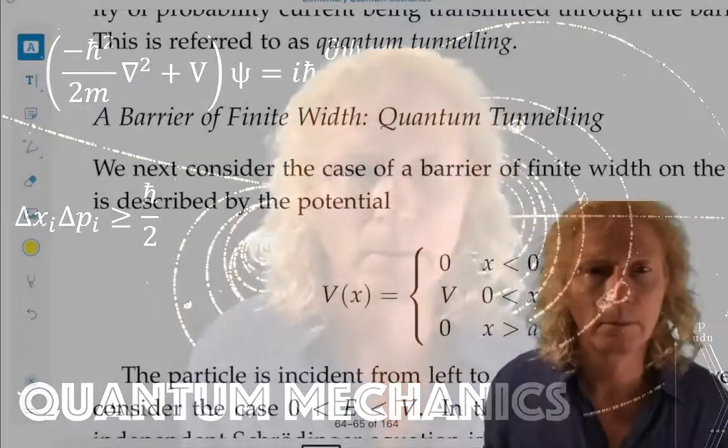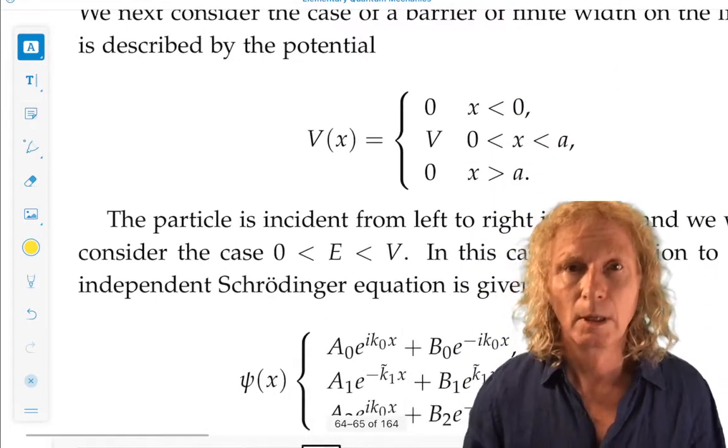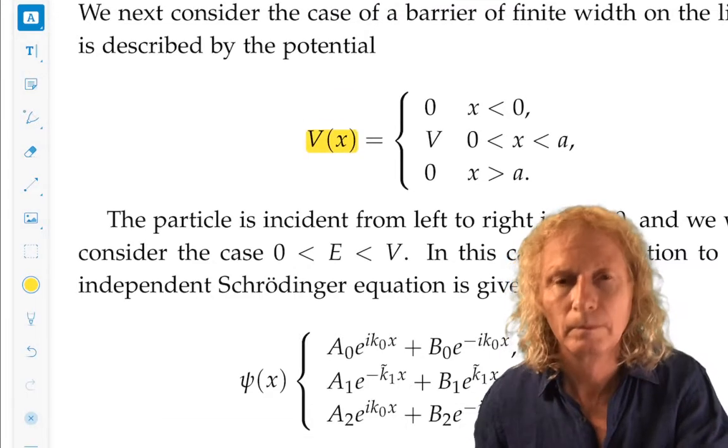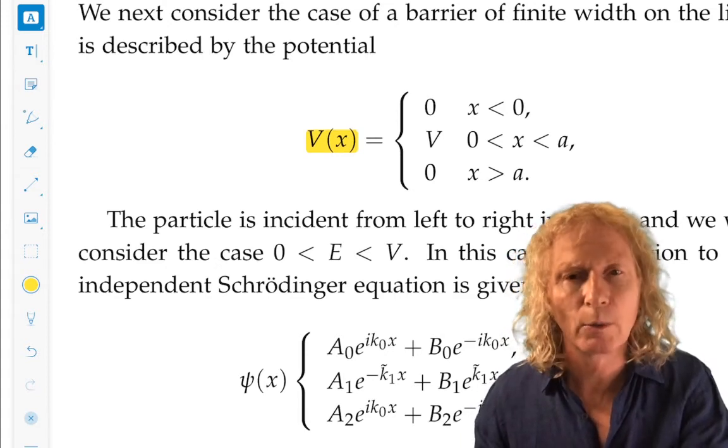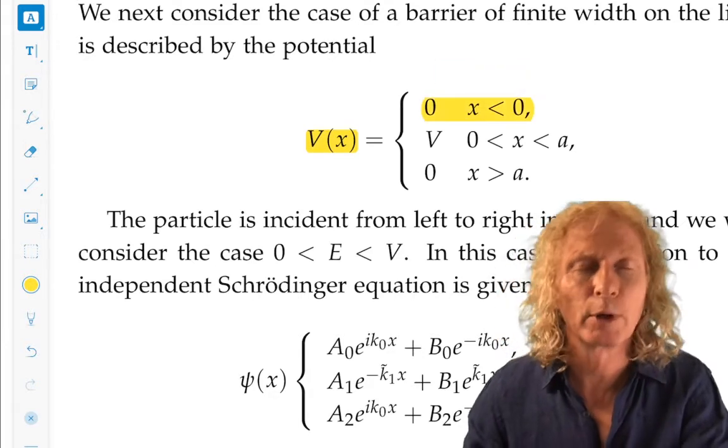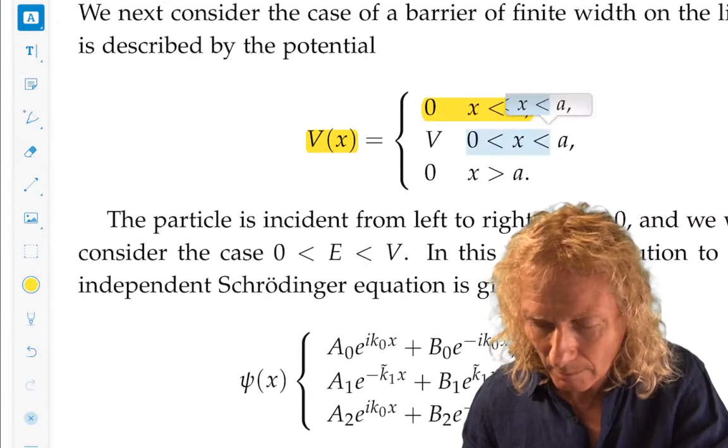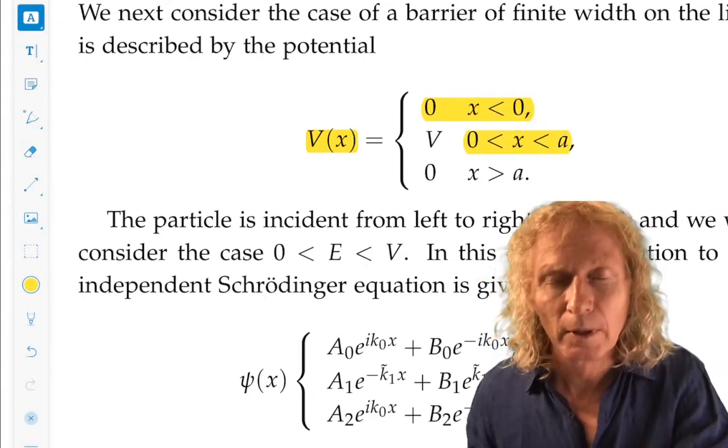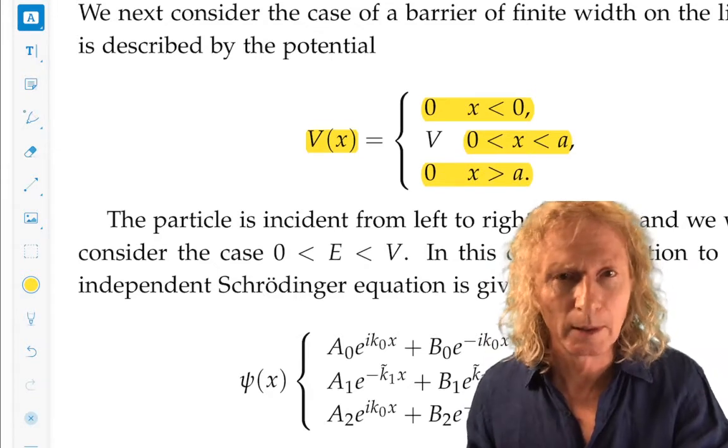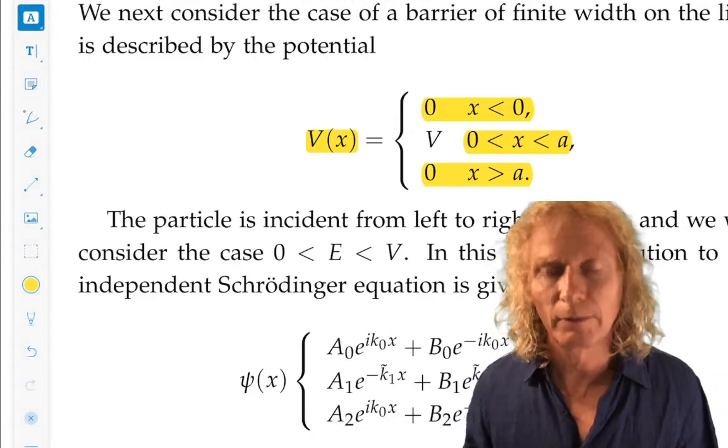So what do we mean by that? Well, you can see the potential. For x less than zero, it's exactly what we've seen in the previous example, constant and zero. Now for zero less than x less than a, V is positive and constant. And for x greater than a, V is zero again. So it's a little rectangle.